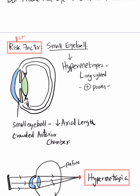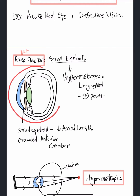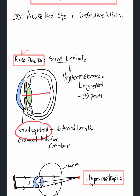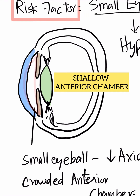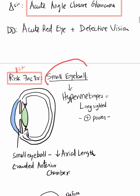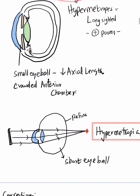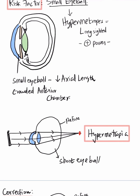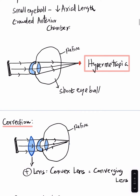The first risk factor is hypermetropia. In a small eyeball — hypermetropia or long-sightedness requiring a plus-power lens — the axial length is reduced, making the anterior chamber crowded and small. This increases the risk of angle closure with triggers. Light rays fall beyond the retina, so a convex plus lens is needed to converge them; that plus prescription is a clue in the question.